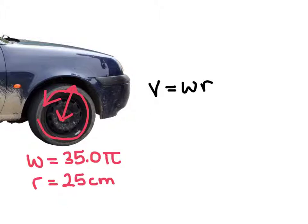for the radius. So we're going to have to convert 25 centimeters to meters. So it would be 0.25 meters. So let's go ahead and plug in those numbers.